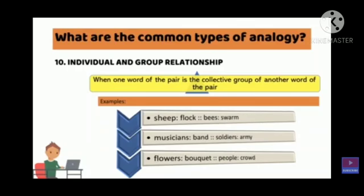The last type is individual and group relationship. When one word of the pair is the collective group of another word. For example: sheep — flock. Bees — swarm. Musician — band. Soldiers — army. Flowers — bouquet. People — crowd.